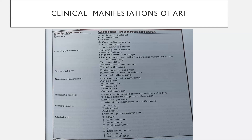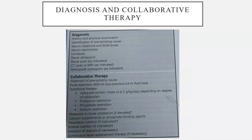Hematological symptoms include anemia, which can develop within 48 hours, increased susceptibility to infection, leukocytosis, and defective platelet functioning. Neurological symptoms include lethargy, seizures, asterixis, and memory impairment. Metabolic symptoms include increased blood urea nitrogen, increased creatinine, decreased sodium, increased potassium, decreased pH, decreased bicarbonate level, decreased calcium, and increased phosphate.